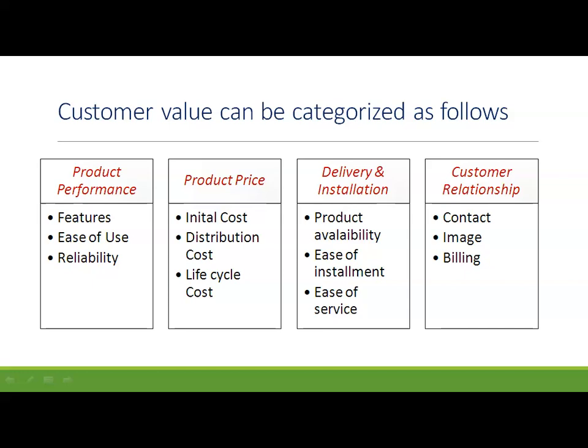Next is product price. What is the initial cost of the product, the distribution cost, and what is the lifecycle cost? Lifecycle cost refers to the product lifecycle concept — initially a product has an introduction stage, then a growth stage, then a maturity stage, and after that the product declines from the market. At each and every stage — introduction, growth, maturity, and declination — there can be different prices for the product. That is called lifecycle cost, and it is associated with product price, which is related to customer value.